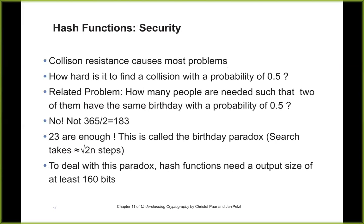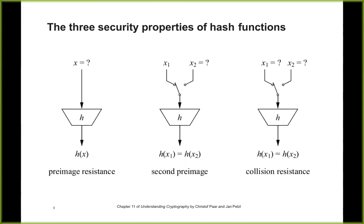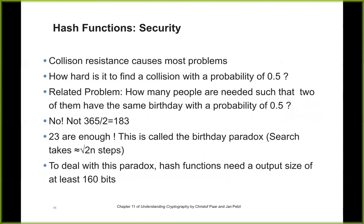Collision resistance is the most difficult property to achieve. One-wayness can be practically violated when cracking passwords, because the password is relatively short and consists of printable characters — you're just checking a finite dictionary. If you really had random files, you couldn't reverse the hash. Cracking passwords isn't truly reversing a hash function; it's checking whether the password was chosen from a specific finite list.